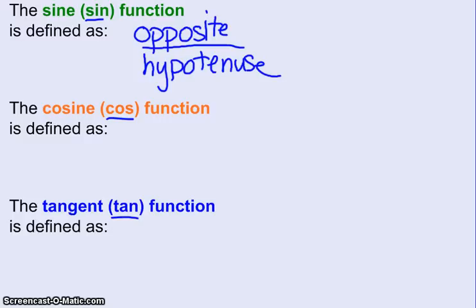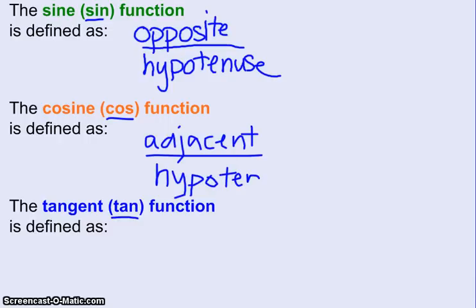We will be taking side lengths of a right triangle, and you'll have to pick the opposite side and the hypotenuse side. The cosine function is defined as adjacent over hypotenuse. So when you're dealing with cosine, you'll be picking two sides of a right triangle, the adjacent side and the hypotenuse side.